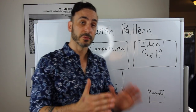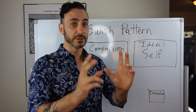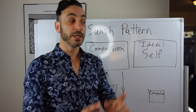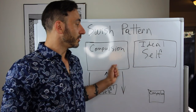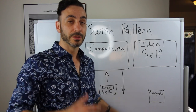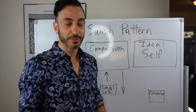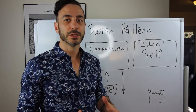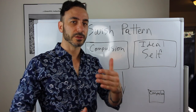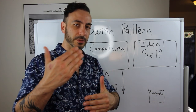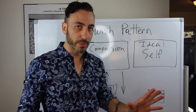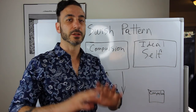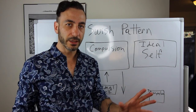The same thing applies to context. If you swish an image of your ideal self that is at work, you can probably break the compulsion at work, but when you come home and you're in a different context, it's not going to work — because it wasn't done in that context. So we leave this open so that it can generalize to all contexts and all behavior.